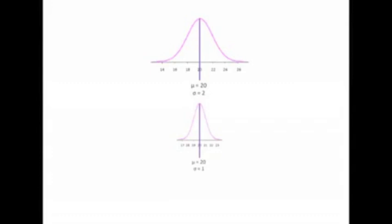When talking about the only two real meaningful descriptive statistics — whether you say it's the mean and the variance or the mean and the standard deviation — you are actually saying the same thing. A large standard deviation means a lot of scatter. A large variance means a lot of scatter. A small standard deviation or small variance means a small scatter.